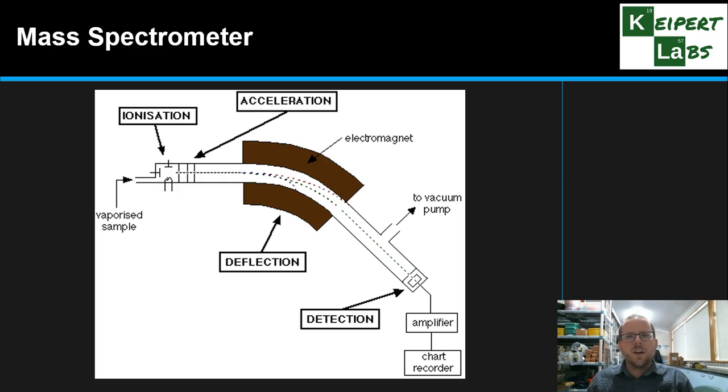So this is a simplified schematic of a mass spectrometer. We're going to go through the process step by step in a moment, but a couple of key features here to show you. We've got a section where there's ionization, acceleration, we've got deflection with the presence of an electromagnet, and then detection at the end, which are the four main stages. Our sample goes in here in the form of a vapor, and then the signal is detected at the other end.